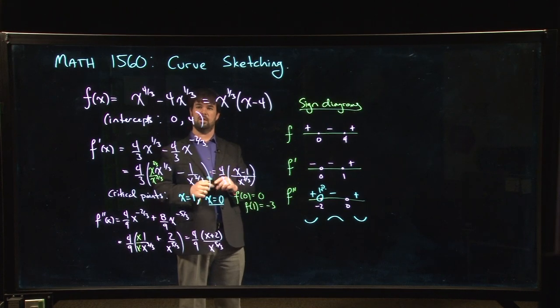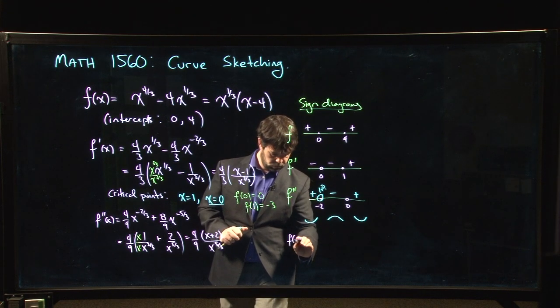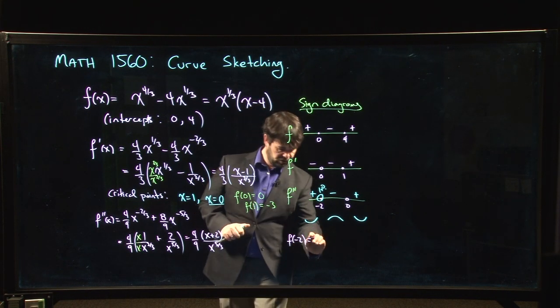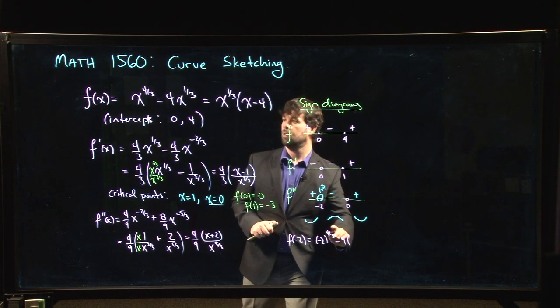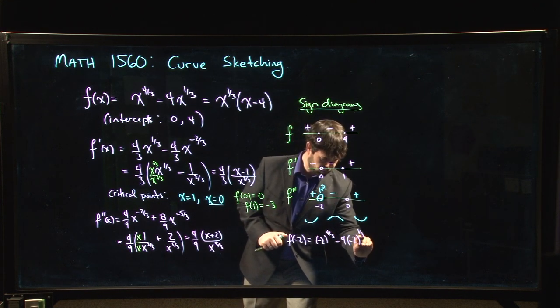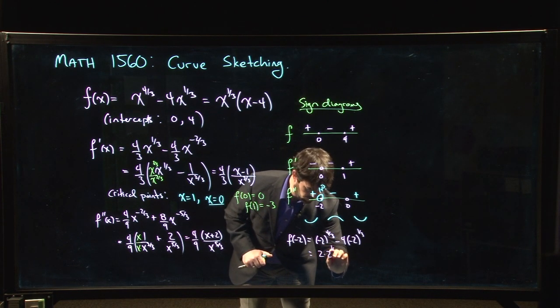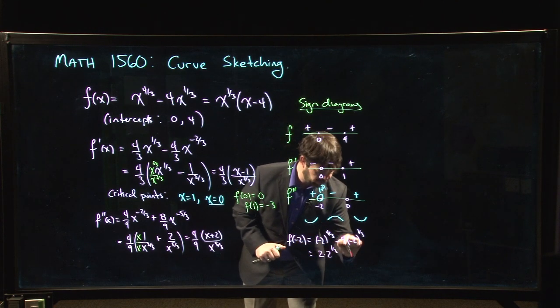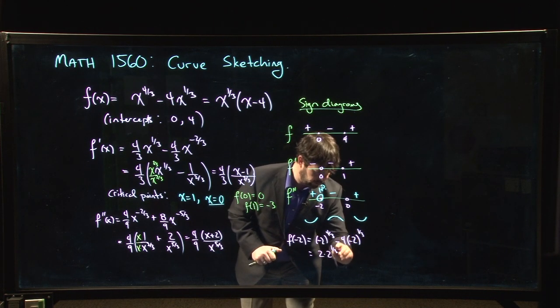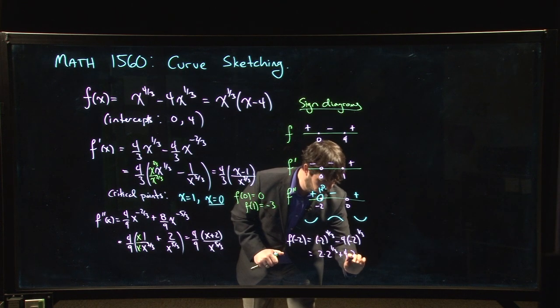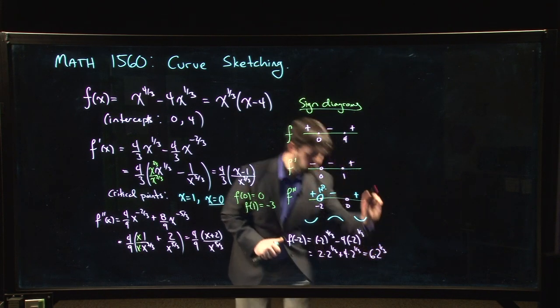And I suppose we should try to calculate what is F at minus 2? It's going to be minus 2 to the 4 thirds minus 4 times minus 2 to the 1 third. So this is 2 times 2 to the 1 third, minus minus, so I lose the minus sign here because the 4 is even, the 1 is odd, that minus sign sticks around, but it cancels with that one. Plus 4 times 2 to the 1 third. So it's 6 times the cube root of 2.